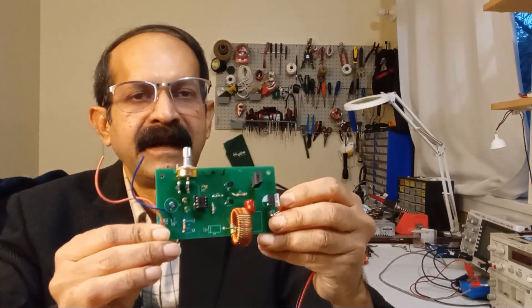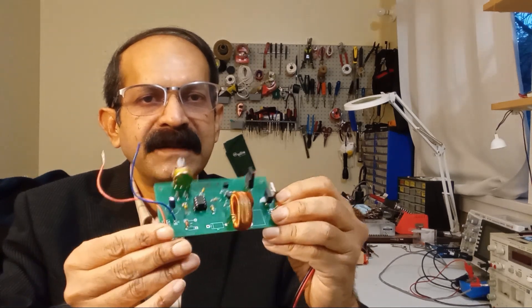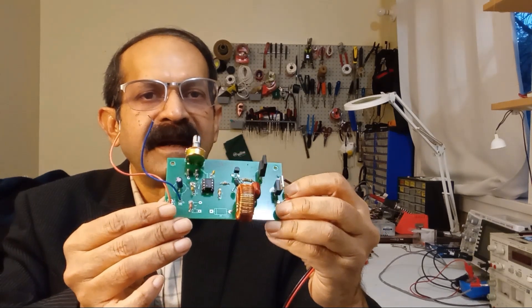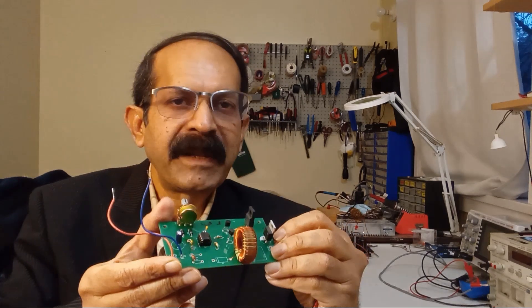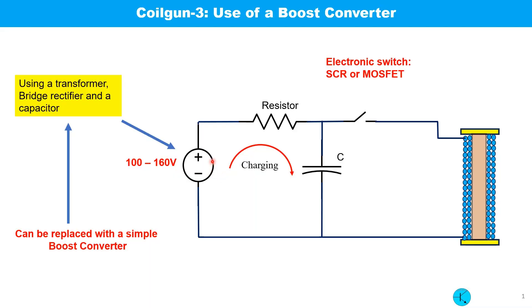But there is another way of getting high voltage - using a boost converter. Here I have one that converts 12 volt to 150 volt easily. You see few components are needed and it is very light. I'll try to explain in this video how you can make your own boost converter. This slide shows the basic coil gun schematic with the high voltage source, and I'm going to use a boost converter to convert 12 volt to 150 volt to replace this supply.